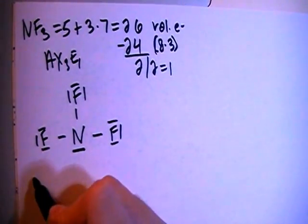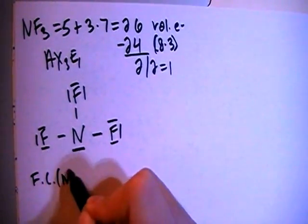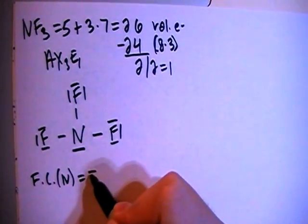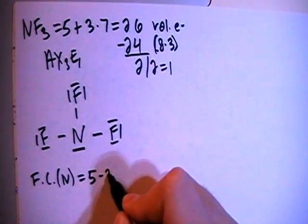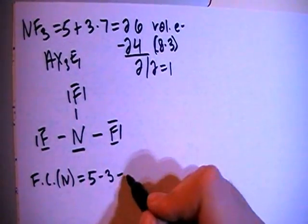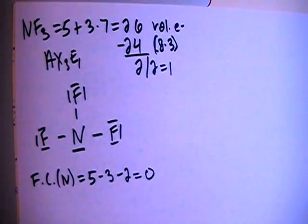Now let's go ahead and check the formal charges just to verify. So the formal charge on the nitrogen is going to be the 5 valence electrons brought in minus the 1, 2, 3 bonds minus 1, 2 non-bonding electrons for a formal charge of 0, okay?